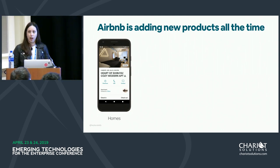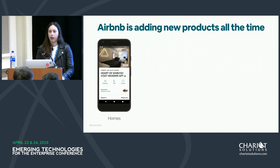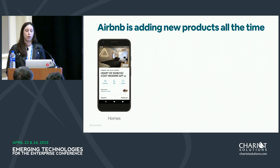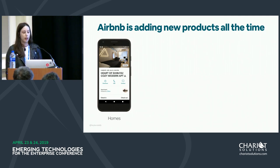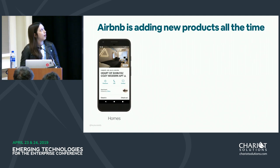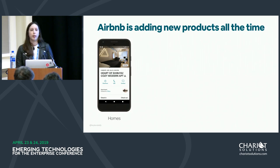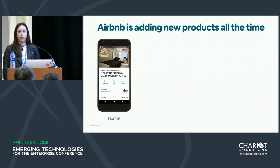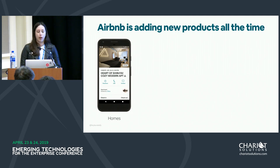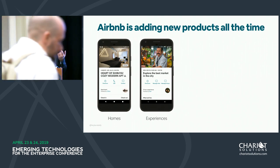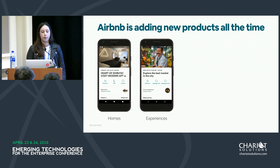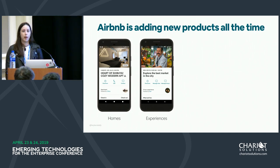Airbnb started out as an accommodations business, a place where you book a home when you're traveling. When you book a home on Airbnb, you'll see a screen that shows you the details of your reservation — a carousel with some photos, a title, and some buttons to give you directions to your home, help you contact your host, and so on. In 2016, we launched Experiences, an activity you can do with a local host when you're traveling. The reservation screen for an experience looks similar but has some subtle differences in the buttons.